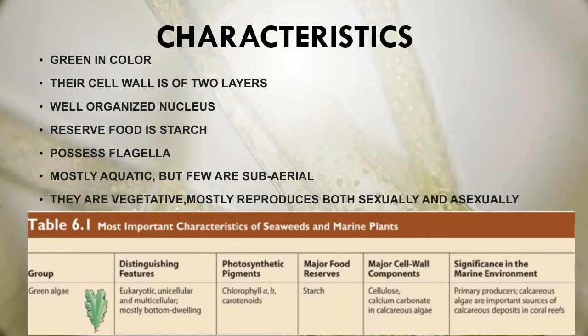Their features: they are eukaryotic, unicellular or multicellular, mostly living at the bottom of the sea. Photosynthetic pigments such as chlorophyll a, chlorophyll b, and carotenoids are present. Major food reserves are starch, and major cell wall components include cellulose and calcium carbonate. They are primary producers and significant in the marine environment.